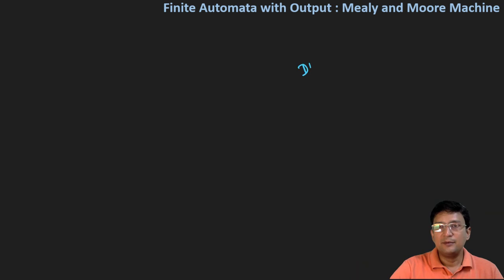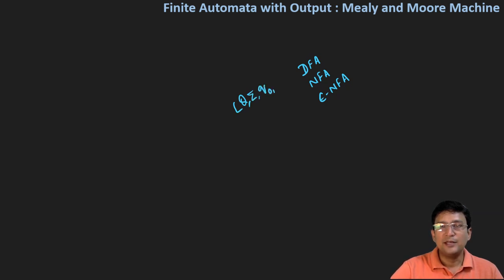What we have studied so far is the DFA, deterministic finite automata. Then we have studied about the NFA, which is the non-deterministic finite automata. And we have also studied about the epsilon NFA, which is the epsilon non-deterministic finite automata. All these things have been defined by the five tuples: set of all states, set of input alphabets, initial state, set of final states, and transition function delta. So NFA, DFA, and epsilon NFA are all defined by this.